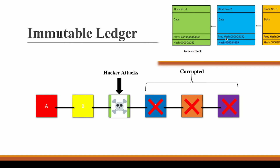Since block C's hash changes, block D — which holds that hash as its previous hash — also changes. And since block D's content changes, its own hash changes too, creating a domino effect all the way down the chain. In this way, all blocks after C get altered, and the distributed blockchain network detects that something is wrong.